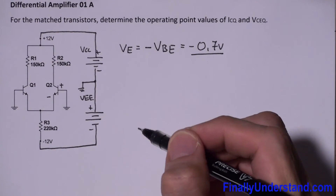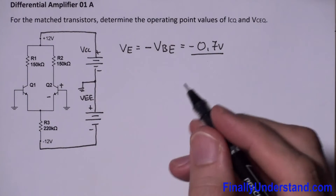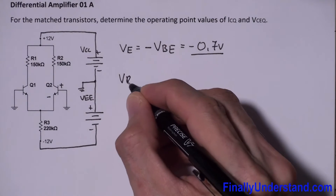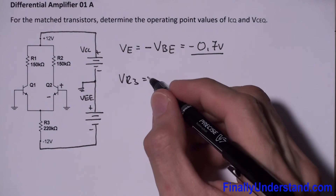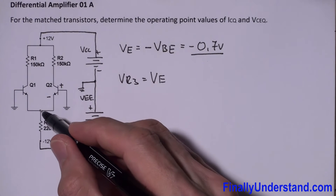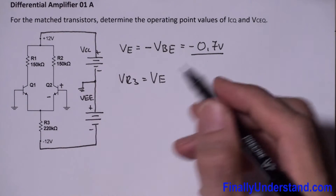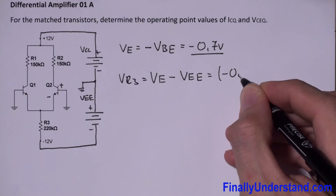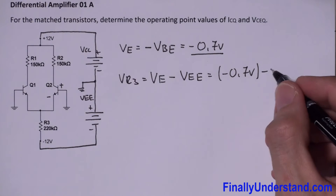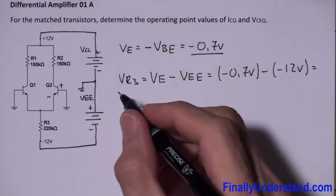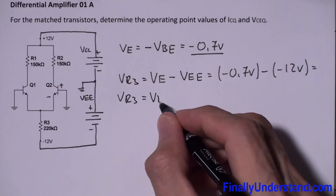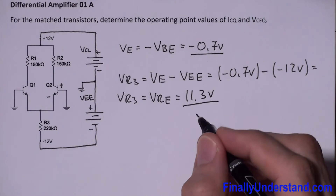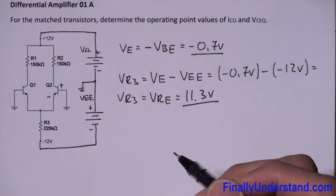Next, to find IC I need to find the current through resistor R3. To do that, I need the voltage across R3. VR3 equals VE minus VEE, where VE is negative 0.7 volts and VEE is negative 12 volts. So VR3, also written as VRE, equals negative 0.7 minus negative 12, which equals 11.3 volts. That is the voltage across resistor R3.